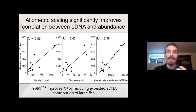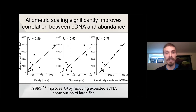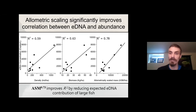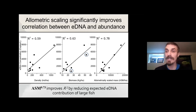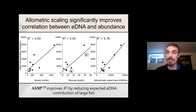Looking at our allometrically scaled abundance metric really significantly improved the fit between eDNA and organism abundance in our study lakes, and it did so in exactly the way we would predict — by basically reducing the expected eDNA contribution of large-bodied fish. To illustrate this, I want to draw your attention to the middle graph, which shows the relationship between biomass and eDNA concentration in these lakes. These two highlighted points are the lakes with the largest negative residuals, meaning there's less eDNA in those lakes than you would expect based on the biomass of fish alone.